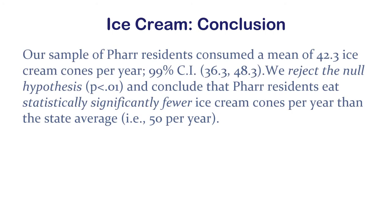We would report the mean as 42.3, the 99% confidence interval as 36.3 to 48.3, and then give our hypothesis test decision: we reject the null hypothesis. P is less than 0.01 because of the way it worked out.